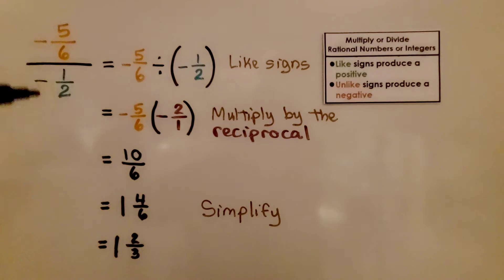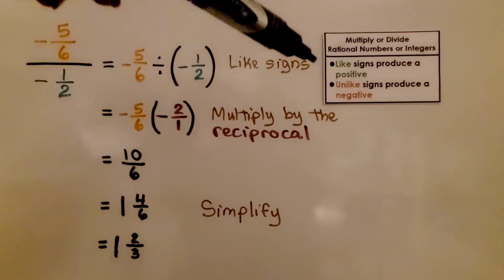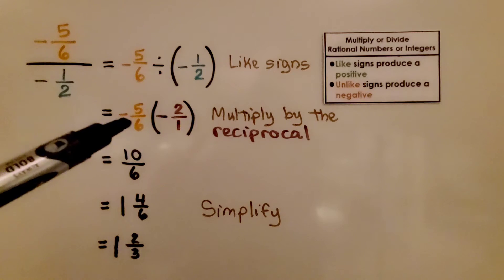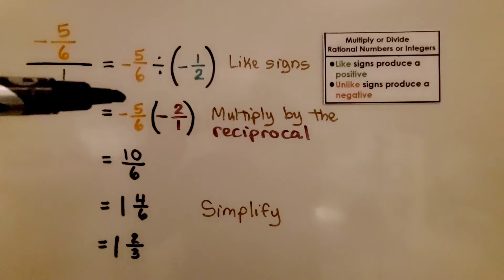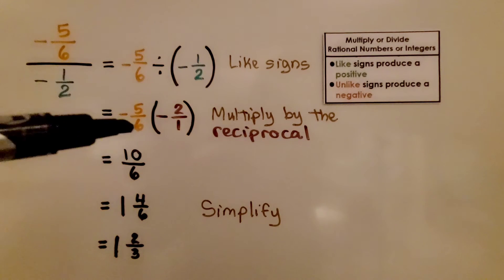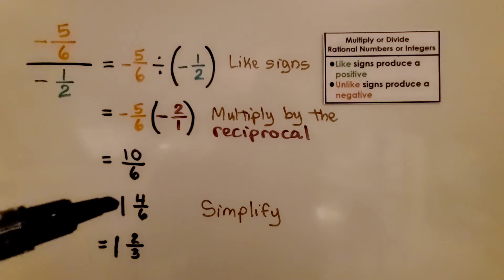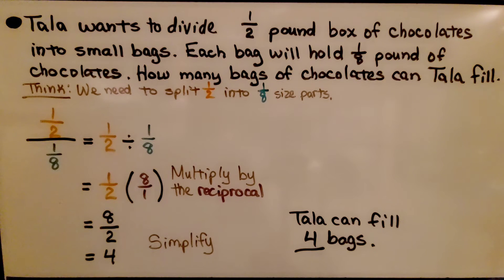Now we have both of them as negatives: negative 5/6 divided by negative 1/2. We can write it like this. They have like signs, so we know like signs produce a positive — our quotient is going to be positive. We multiply by the reciprocal: instead of negative 1/2, we use negative 2 over 1, and multiply straight across. 5 times 2 is 10, 6 times 1 is 6. We have positive 10/6, which simplifies to 1 and 4/6, which simplifies to positive 1 and 2/3.